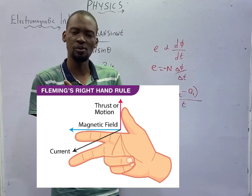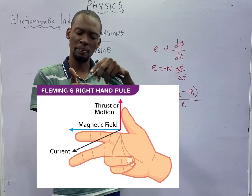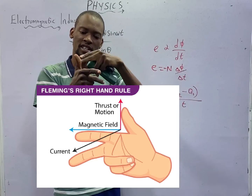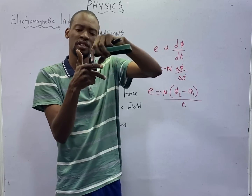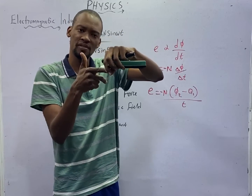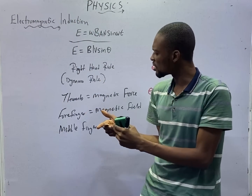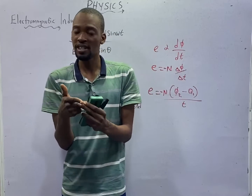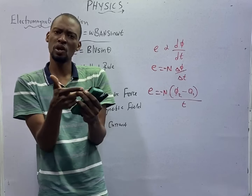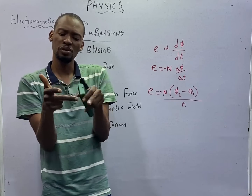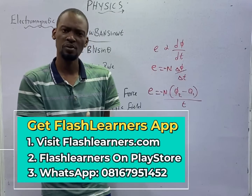So Fleming's right hand rule: place your thumb, forefinger, and middle finger perpendicular to each other at 90 degrees. The thumb is the direction of the force or motion, the forefinger is the direction of the magnetic field, and the middle finger is the direction of the current. Since induced EMF gives rise to induced current, the middle finger also gives the direction of the induced EMF.